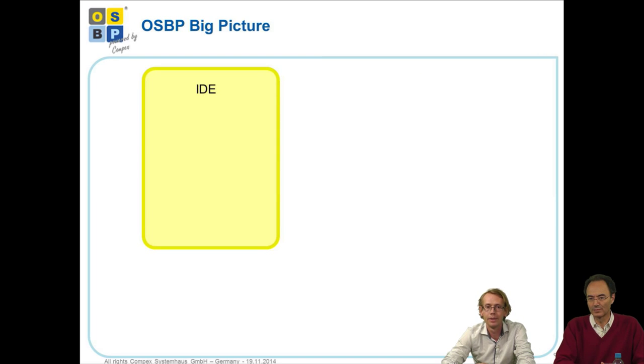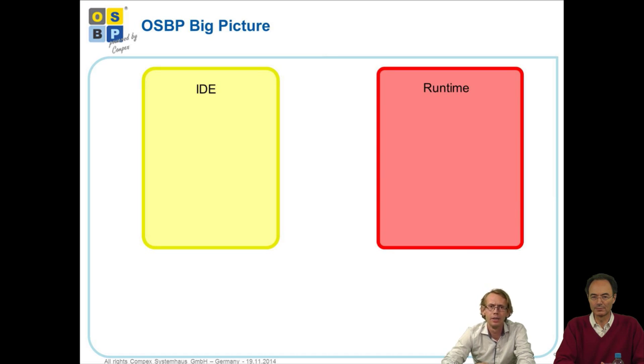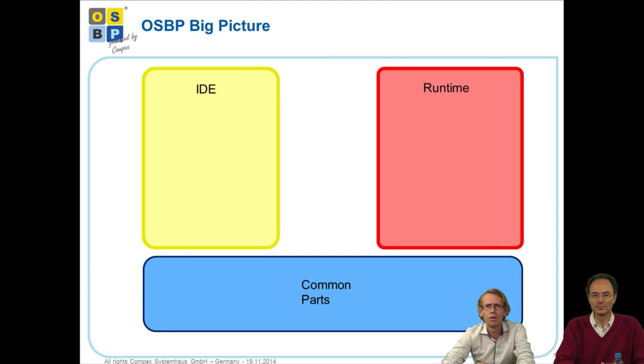So in the OSBP, we have two different use cases. We have an IDE. Each developer needs to use an IDE to write down the models to use the domain specific languages based on X-text. And on the other hand, we have a runtime. The runtime, just think about a JBoss web server. That's comparable with the runtime. And we also have common parts. Common parts means parts that are needed for the IDE and also needed for the runtime. So we have tools for development time and the server for runtime.